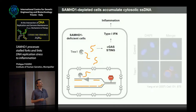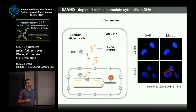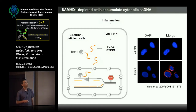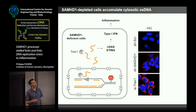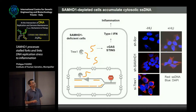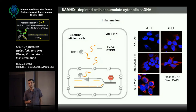We decided to look directly at whether we could detect single-stranded DNA in the cytosol. This was actually shown to be the case in a paper from the lab of Debbie Barnes, where she showed that in the absence of TREX1 — another nuclease present in the cytosol that degrades DNA species — there is a very strong increase of single-stranded DNA detected using an antibody against single-stranded DNA. We asked whether it's the same in SAMHD1-depleted cells. In untreated cells there is a little more, but nothing compared to TREX1-depleted cells. If you treat cells with hydroxyurea, you see this DNA appearing in control cells and to a much larger extent in SAMHD1-depleted cells.